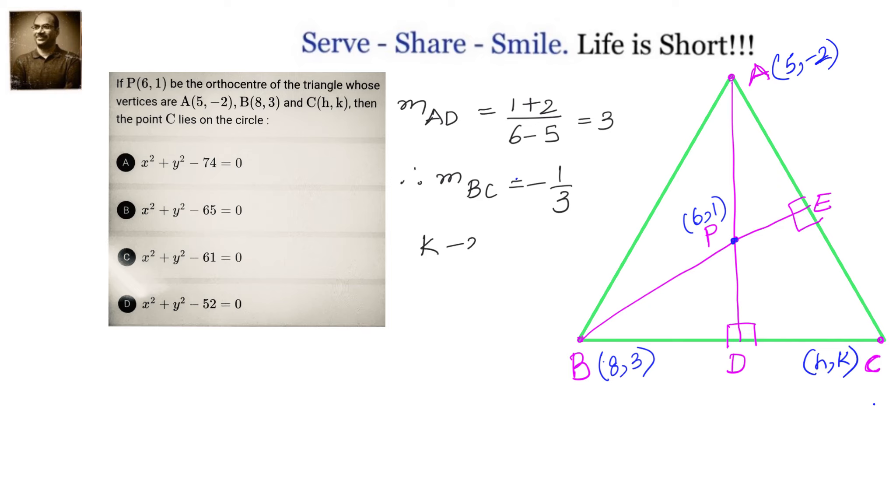Now, AD is perpendicular to BC. Therefore, the slope of BC will be minus 1 by 3. But we can equate this to again y2 minus y1 by x2 minus x1 formula for BC. We will get 3k minus 9 equals 8 minus H, or H plus 3k equals 17. So we got one equation. We need one more equation.